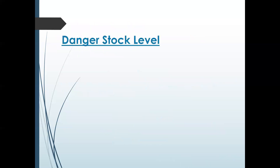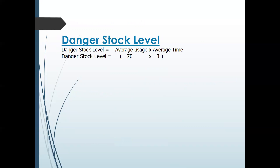Last is the dangerous stock level. If stock falls below this level, you are in the danger zone. The formula is: Dangerous Stock Level = Minimum Usage × Minimum Lead Time. Minimum usage is 70 and minimum lead time is 3, so dangerous stock level = 70 × 3 = 210 units. If stock falls to 210 units, that is the danger zone.